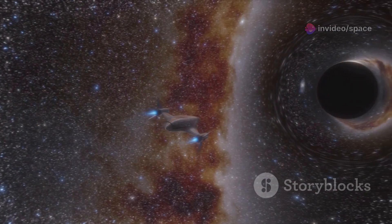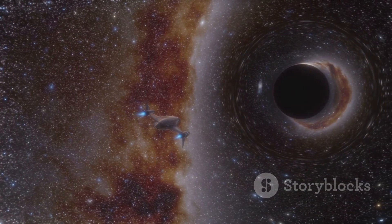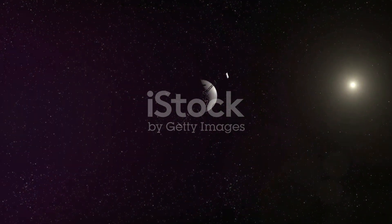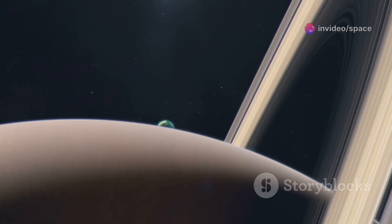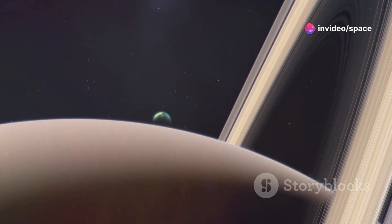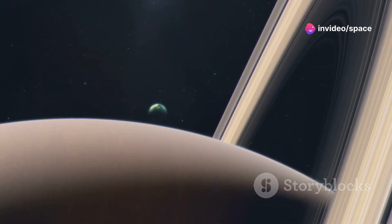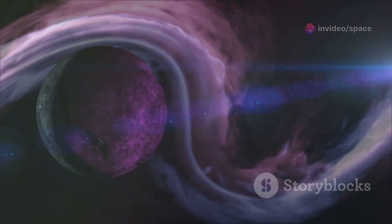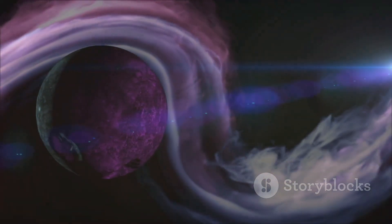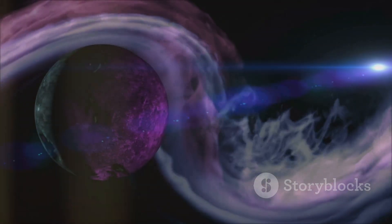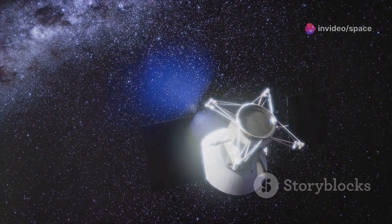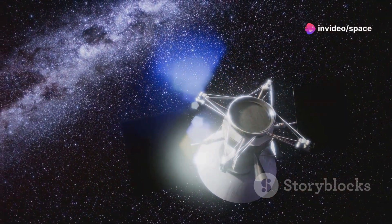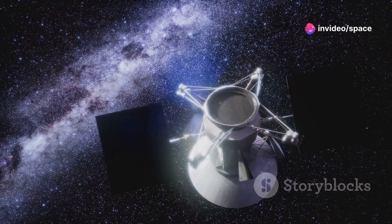Voyager 1's journey is a masterclass in celestial mechanics. It used gravity assists, slingshots around Jupiter and Saturn to gain speed and alter course. The close flyby of Saturn's moon Titan sent it on a one-way path out of the solar system. For decades it traveled through the heliosheath, the turbulent boundary where the solar wind meets interstellar space. Its instruments measured magnetic fields, particle density and temperature, our first direct touch beyond the sun's influence.